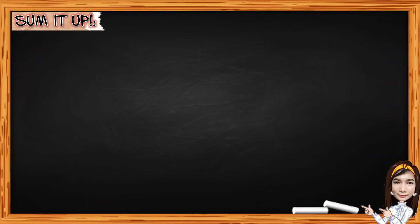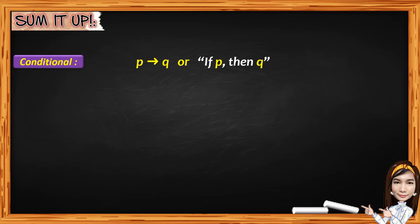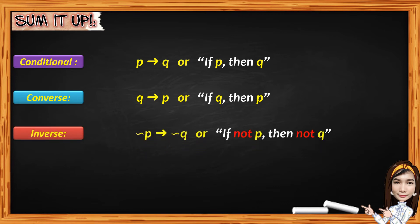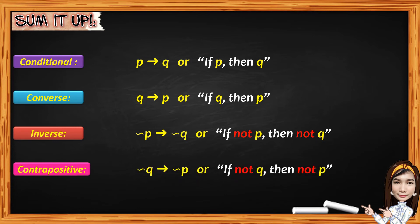Now, to sum it up: for the conditional, we have if P, then Q. For the converse, if Q, then P. For the inverse, if not P, then not Q. And for the contrapositive, if not Q, then not P.